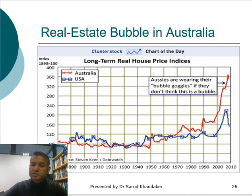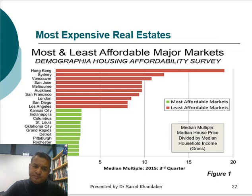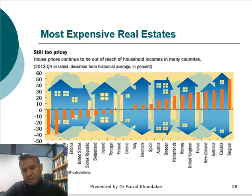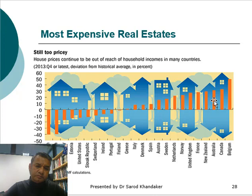This slide talks about the most expensive real estate in the world. Number one is Hong Kong, and Sydney is second, with Melbourne not far behind. So Australia has one of the highest house prices in the world. Another slide on the most expensive real estate shows that Belgium, Canada, and Australia have the most expensive houses in the world, while Japan, Korea, Germany, and Estonia have moderately lower house prices.